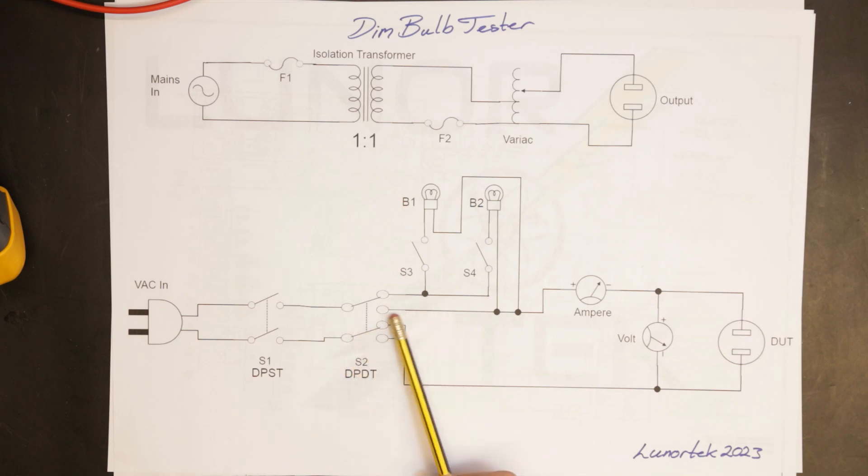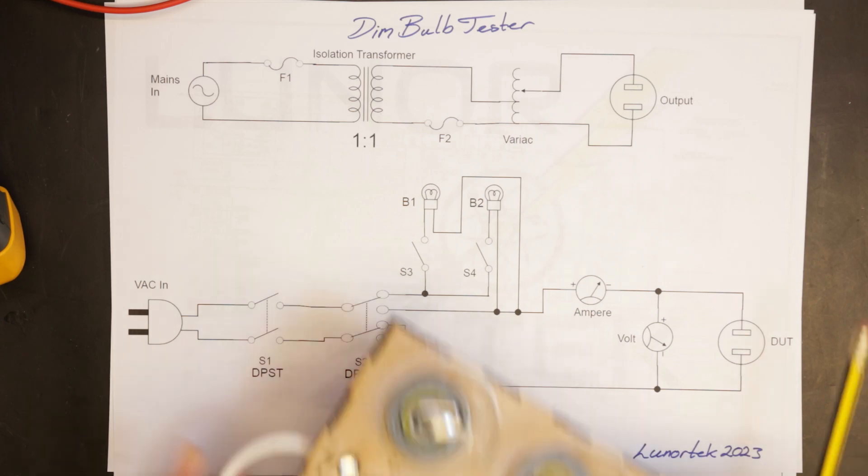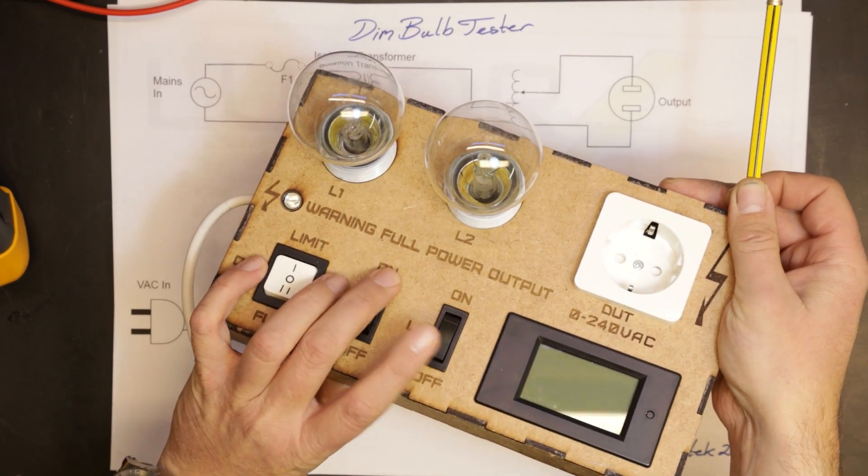be able to bypass the bulbs or connect via the bulbs. Then I got the two switches here for the bulbs, switch three and four. Then I got a current meter, then I got a voltmeter